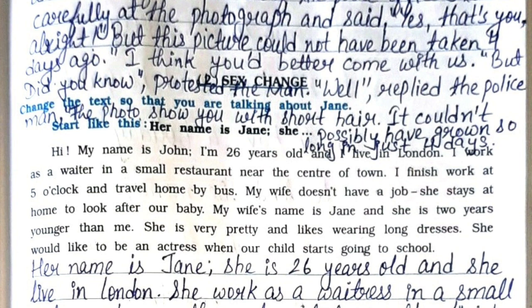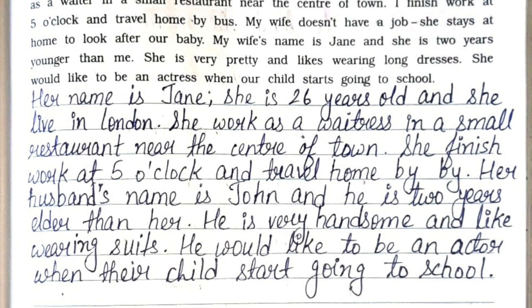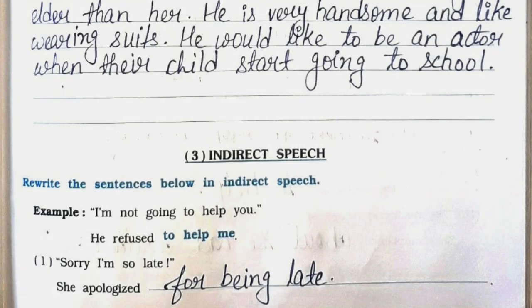Next is sex change — that is, change the text so that you are talking about Jane. Start like this: 'Her name is Jane.' You need to change the gender of the paragraph. You can see the paragraph and complete it in your workbook. Next is indirect speech.